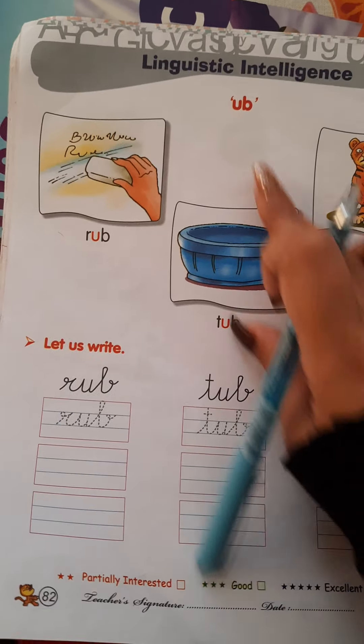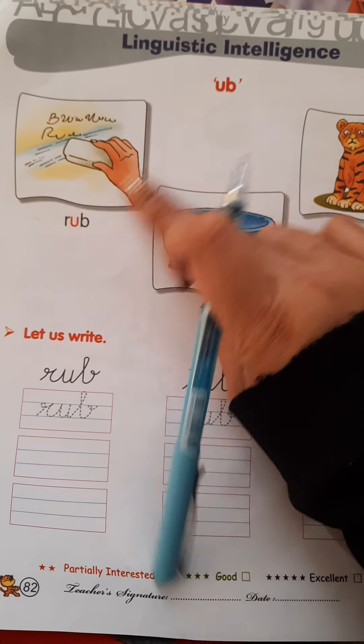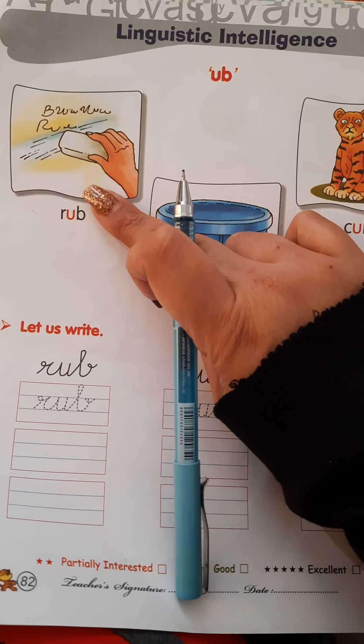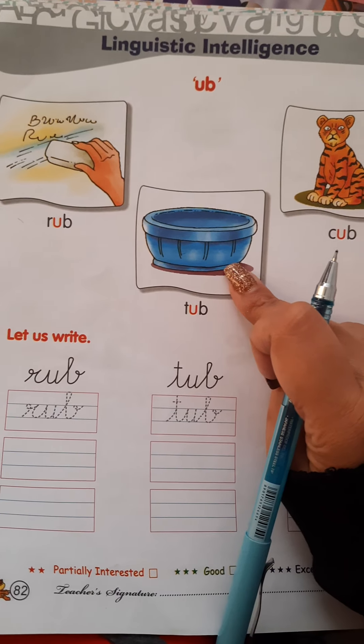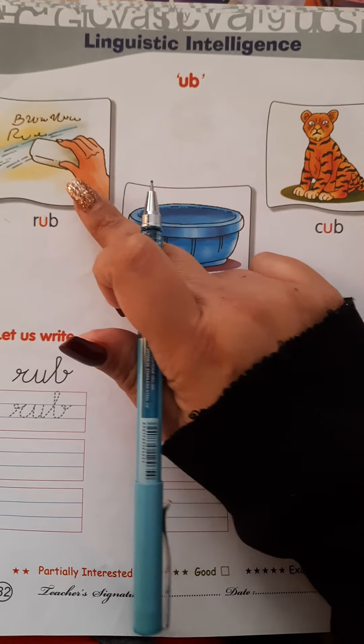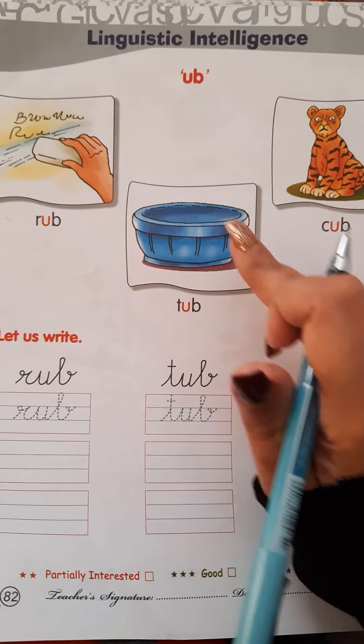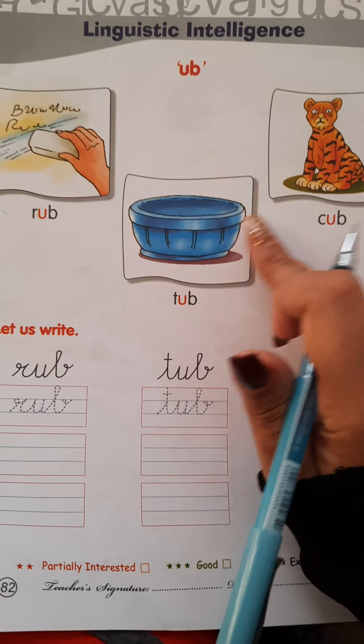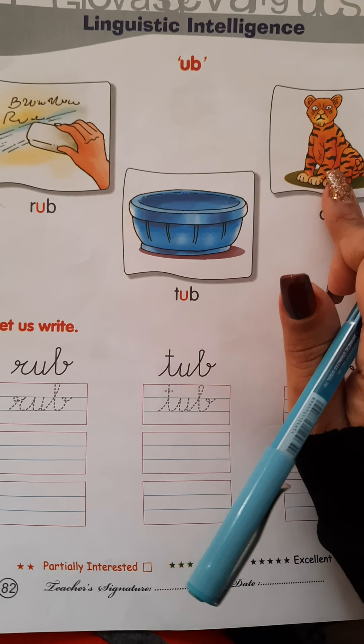Turn your page. UB sound words: rub, tub, cub. Rub, tub, cub.